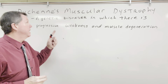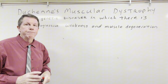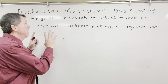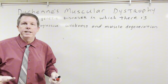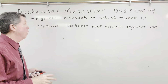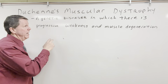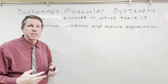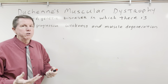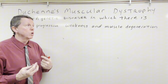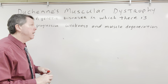Hi everybody. Today we're going to be looking at Duchenne's muscular dystrophy. The definition is already written on the board: a genetic disorder in which there is progressive weakness and muscle degeneration, and it's associated with a protein called dystrophin, which we'll get into in just a minute.